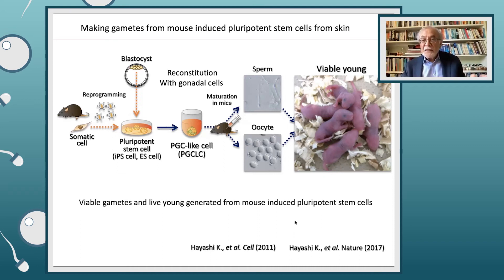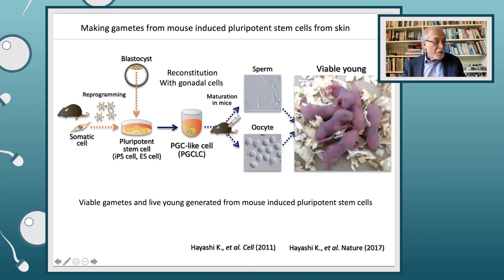I have to say that this looks really straightforward, but the efficiency is extremely low. Most of these gametes — eggs, for example — don't develop very well, so it's a very tiny fraction. It's still quite a challenge, but in principle it's possible to make these germ cells from skin cells.